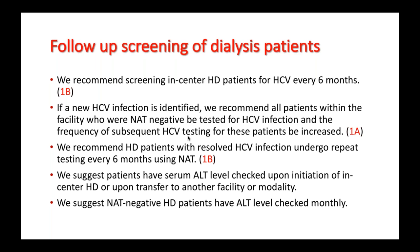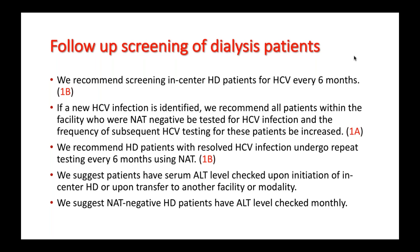For dialysis patients already on dialysis for some time, the recommendation is to screen in-center hemodialysis patients every six months. If a new anti-HCV infection is identified, all patients within the facility who were nucleic acid test negative should be tested, and the frequency of subsequent HCV testing should be increased — for example, from every six months to once every three months. All hemodialysis patients who had HCV infection in the past but have been cured should undergo repeat testing every six months using nucleic acid testing.